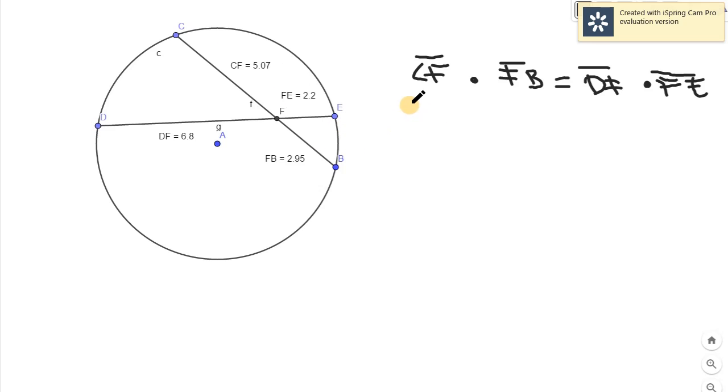The value of CF is 5.07 and the value of FB is 2.95. It should be equal to the product of DF which is 6.8 times FE which is 2.2. Let's try to multiply them. 5.07 times 2.95, the answer is 14.95. And let's hope that if we multiply 6.8 times 2.2, the answer would still be the same or at least approximately. The answer would be 14.96.